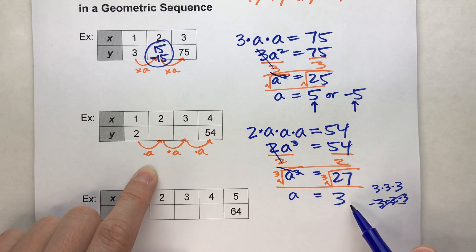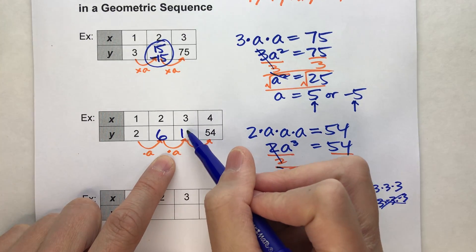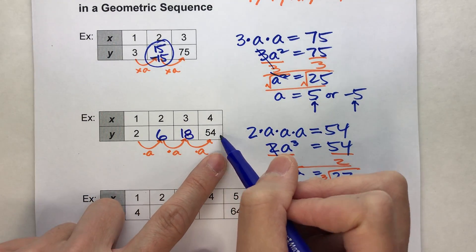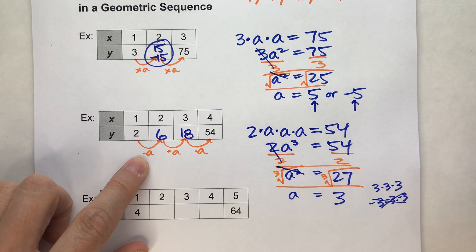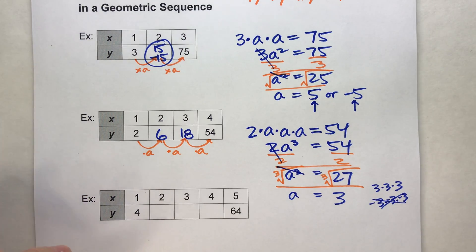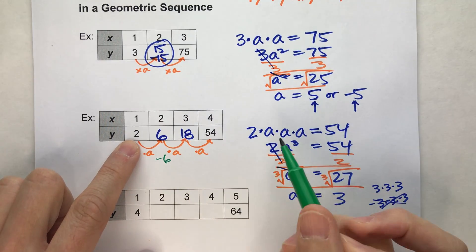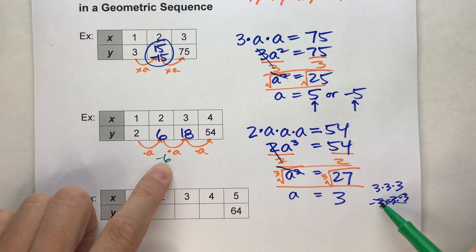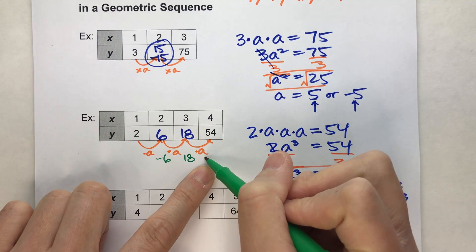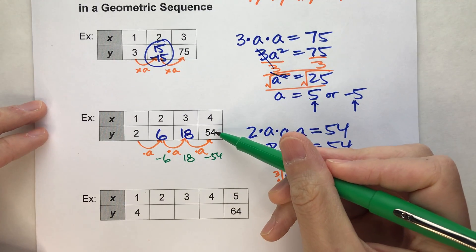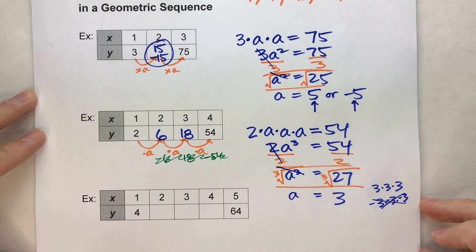Let's check: 2 times 3 is 6, 6 times 3 is 18, 18 times 3 is 54 — it works! And if you're not sure about negative 3, let's try it: 2 times negative 3 is negative 6, negative 6 times negative 3 is positive 18, and positive 18 times negative 3 is negative 54. We needed positive 54, so that sequence doesn't work. It had to be 3.